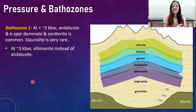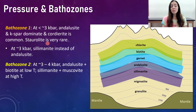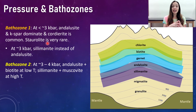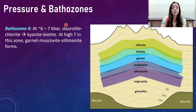In Barrow zone one, at around less than 3 kilobars, andalusite and K-spar dominate, cordierite is common, and staurolite is very rare. Right at the boundary between zone one and two, at around 3 kilobars, sillimanite can be present instead of andalusite. In Barrow zone two, from around 3 to 4 kilobars, andalusite and biotite are present at low temperatures and sillimanite and muscovite at high temperatures. In Barrow zone three, from 4 to 6 kilobars, the assemblage of muscovite, staurolite, and chloritoid breaks down to sillimanite and biotite; andalusite is not stable with biotite in this pressure zone. In Barrow zone four, from 6 to 7 kilobars, staurolite and chlorite transition into kyanite and biotite, and at high temperatures garnet, muscovite, and sillimanite assemblages form.